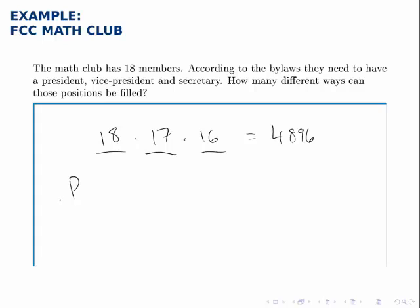And so we use the permutation formula where n is 18, we're choosing from 18 people, and r is 3. We select 3 people and organize them into one of these categories. So we get n factorial divided by n minus r factorial.